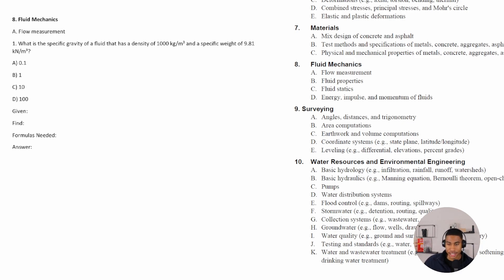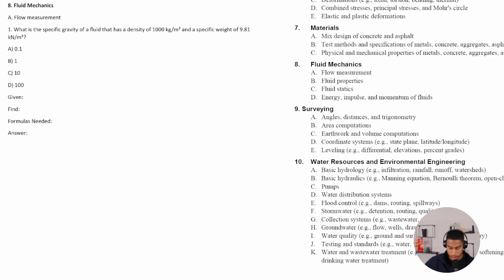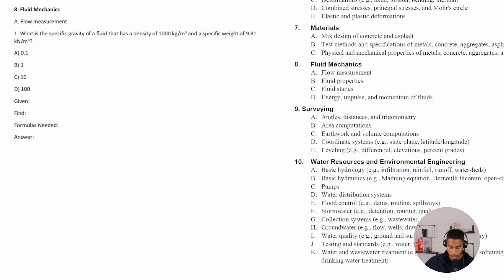...be making sure our units make sense, canceling them, canceling certain units off and making sure we get the proper unit so that we can get the right answer that we need. All right, so number one says: what is the specific gravity of a fluid that has a density of 1000 kilograms per meter cubed and a specific weight of 9.81 kilonewtons per meter cubed?